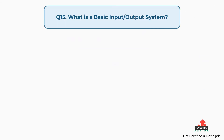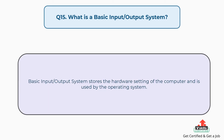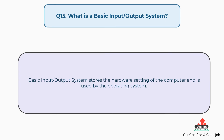Question number fifteen: what is a basic input output system? The answer is, the basic input output system stores the hardware settings of the computer and is used by the operating system.